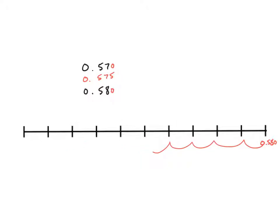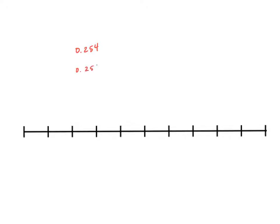Let's look at one more example. This time, let's say we have zero and two hundred fifty four thousandths and zero and two hundred fifty five thousandths. I can place these on my number line and make equivalent decimals by placing a zero in the ten thousandths place. Thinking of this as two thousand five hundred forty and two thousand five hundred fifty ten thousandths, exactly halfway in between would be two thousand five hundred forty five. In between forty and fifty is forty five, so my exact midpoint is zero and two thousand five hundred forty five ten thousandths.